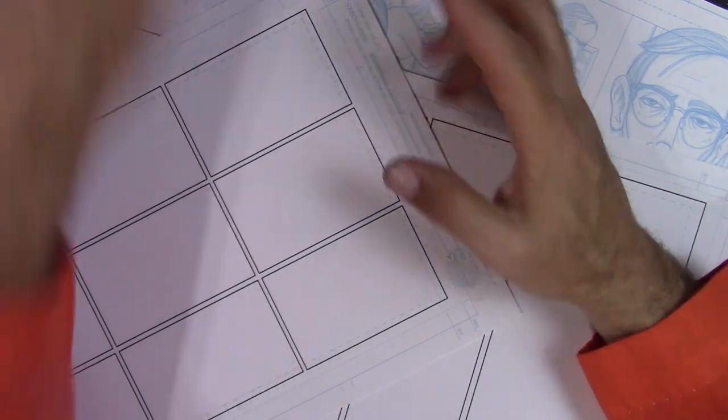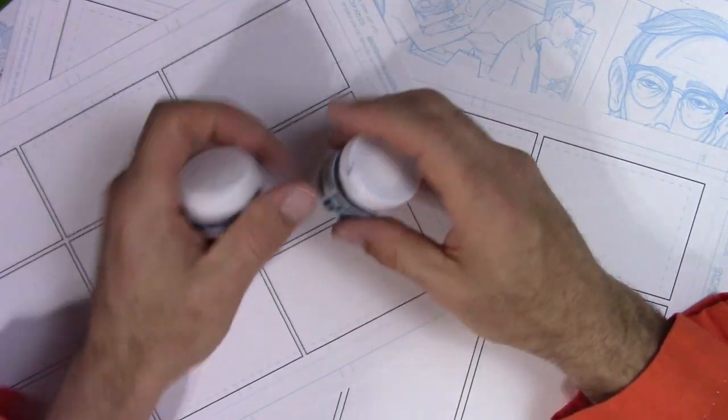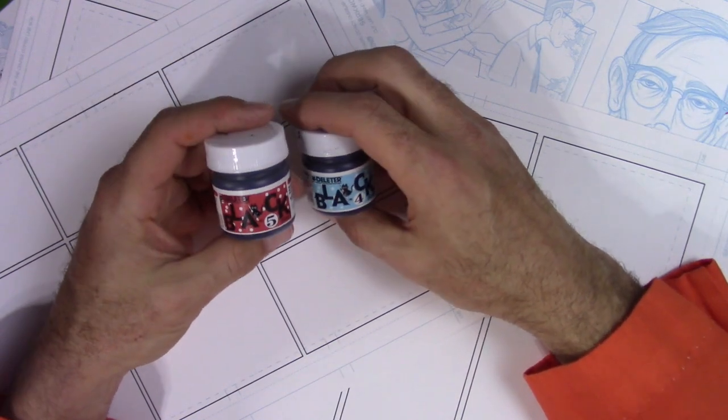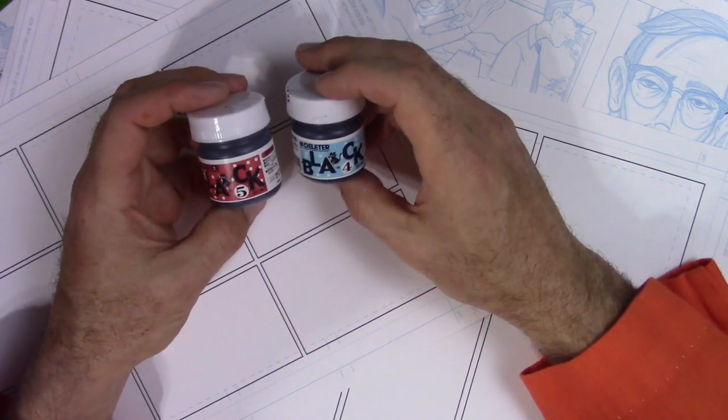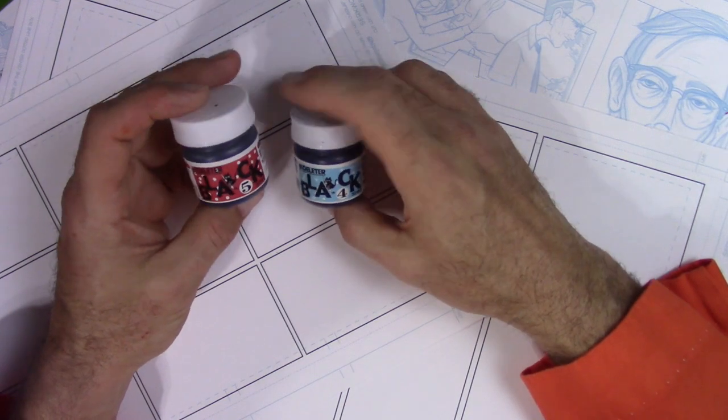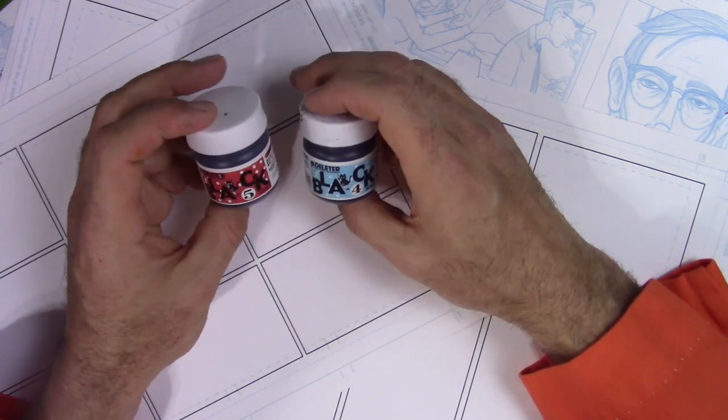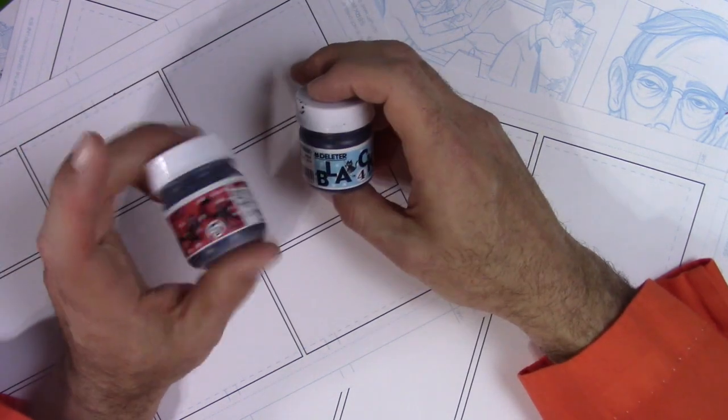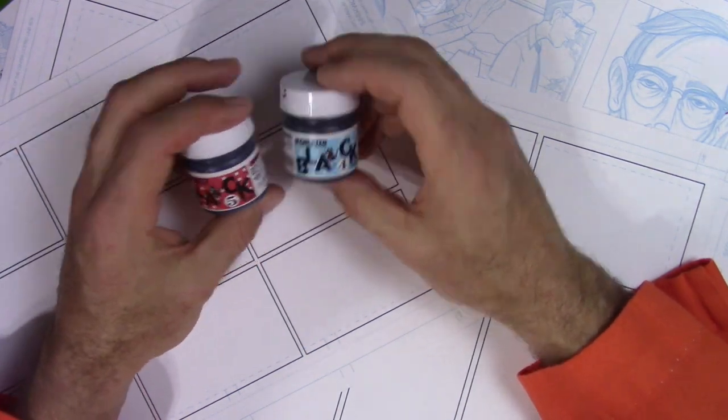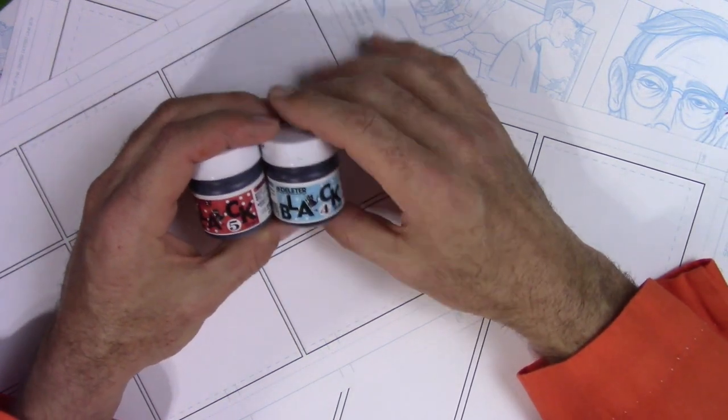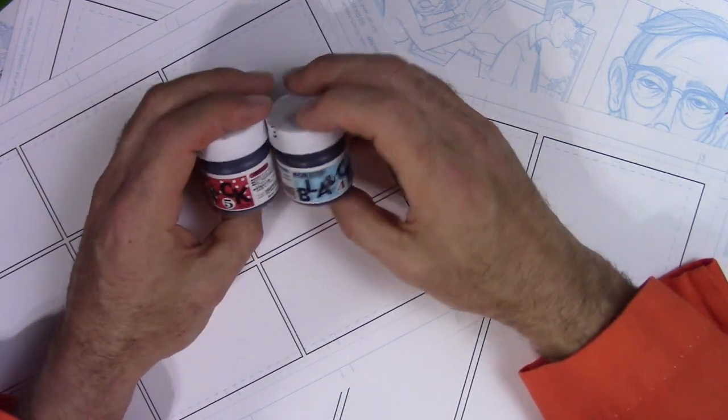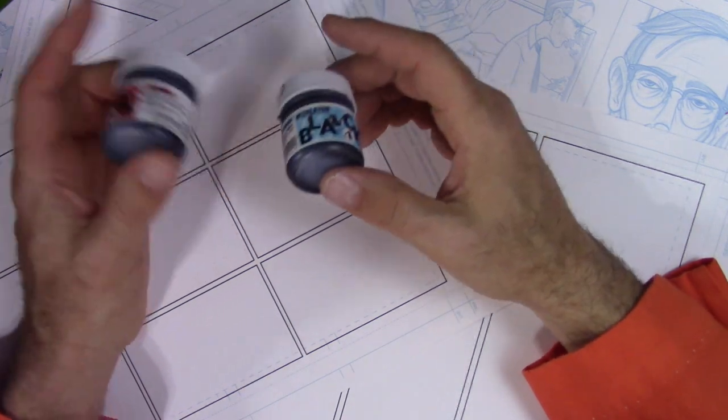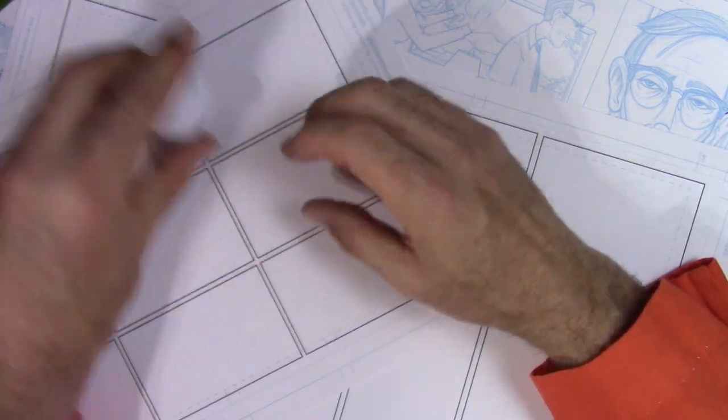When you're using any of these inking tools, obviously you're going to need ink. My favorite ink right now currently is Deleter Black, and this is number five. I was using number five and I switched to number four. Number four is more of a matte finish. Number five has a little bit of a glossy finish. I kind of prefer the matte, but they're both really great inks.